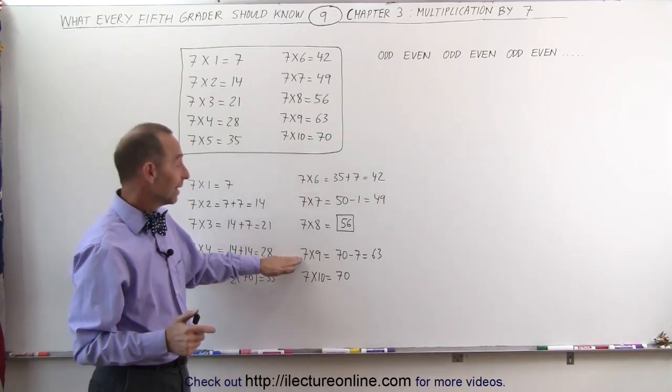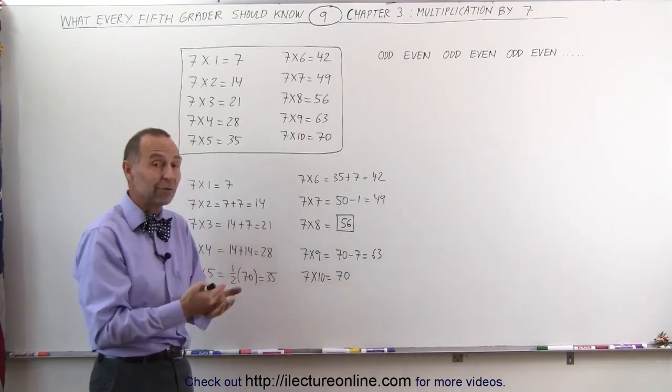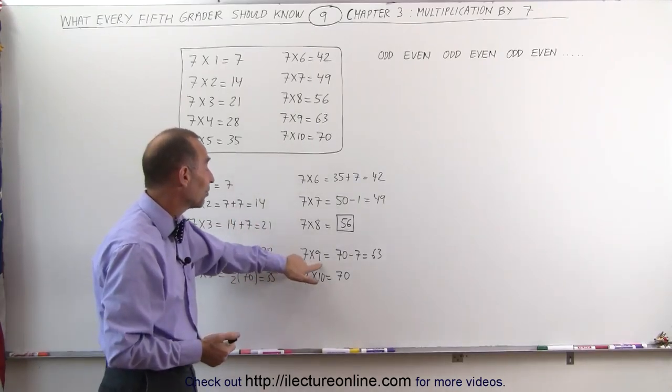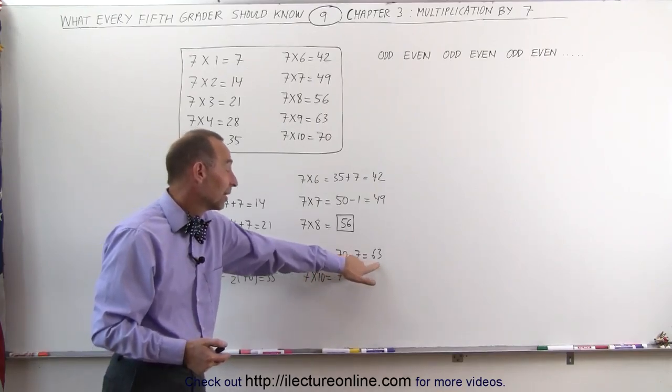7 times 9, that's always the easy one. Anytime you multiply times 9, you multiply times 10 and subtract the number from it. In this case, 7 times 9 is 7 times 10, which is 70, minus 7 gives you 63.